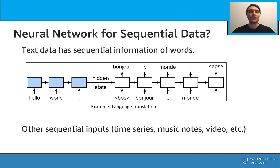As humans, it is an easy task to understand the meaning. But for machines, this still remains to be a difficult task. For example, assume we have a language translation task. A machine learning model takes the text as input and needs to produce a different text in a different language. It not only needs to produce the right words, but also needs to put them in the right places. And this is a difficult task.